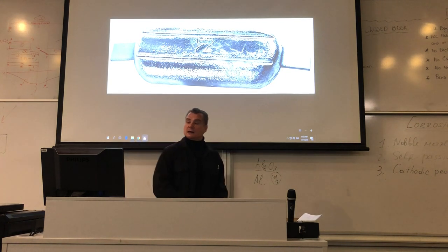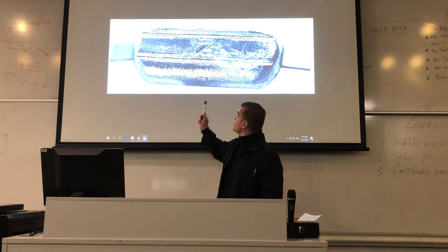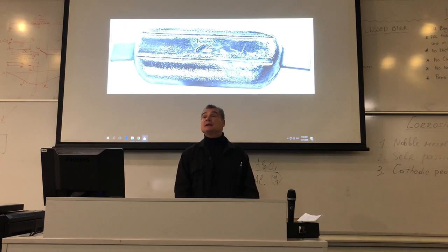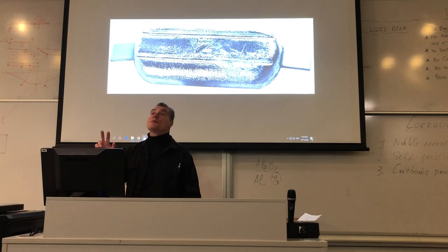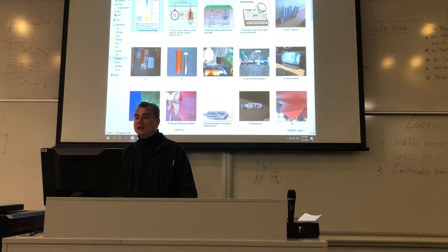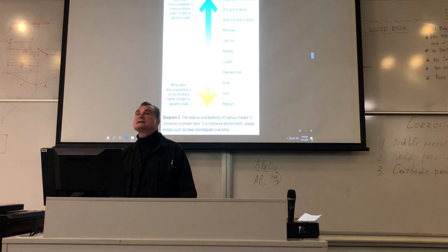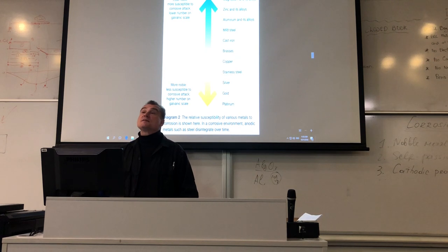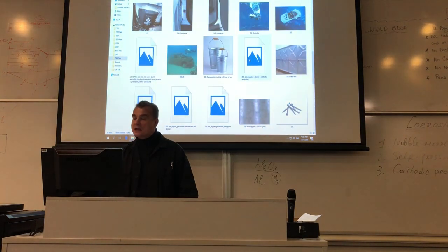This is how a sacrificial anode looks like. The 'Z' stands for zinc. We have two main popular options: we can use either magnesium or zinc. Those two metals are most active and will save other metals. Can we use aluminium with mild steel? Aluminium will corrode when combined with mild steel, but the problem with aluminium is self-passivation — aluminium can stop corroding by protecting itself. So we need something more active, and magnesium and zinc are the most active options for sacrificial anodes.